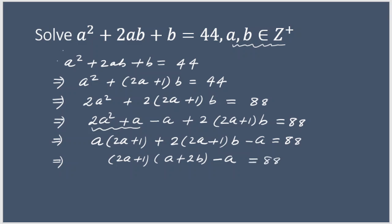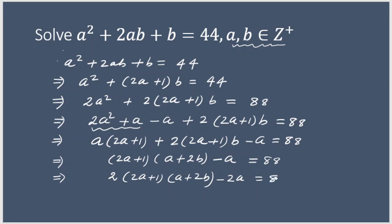What should be done next? We still have a here. So suppose I multiply both sides of the equation by 2 again. I will get 2(2a + 1)(a + 2b) − 2a = 176.